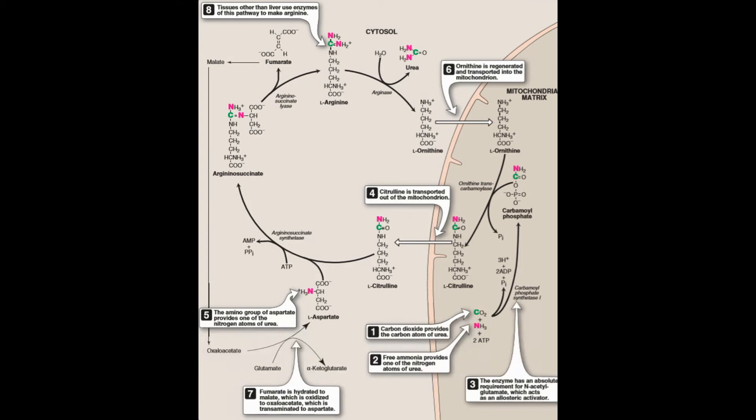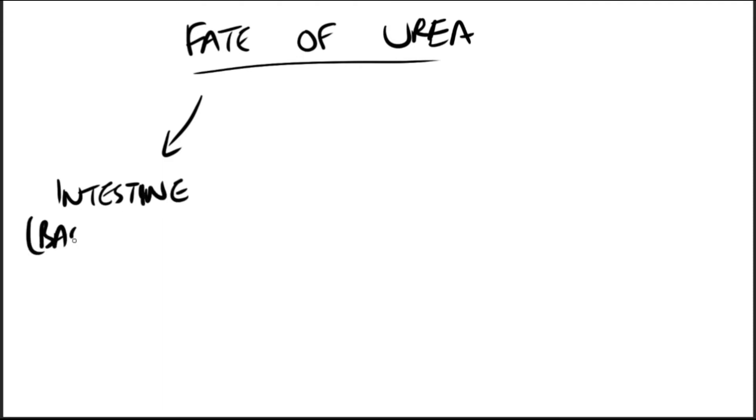So that is the urea cycle for you. Now speaking about the fate of urea, a portion of the urea diffuses from the blood into the intestine and is cleaved to carbon dioxide and ammonia by bacterial urease. This ammonia is partly lost in the feces and is partly reabsorbed into the blood.